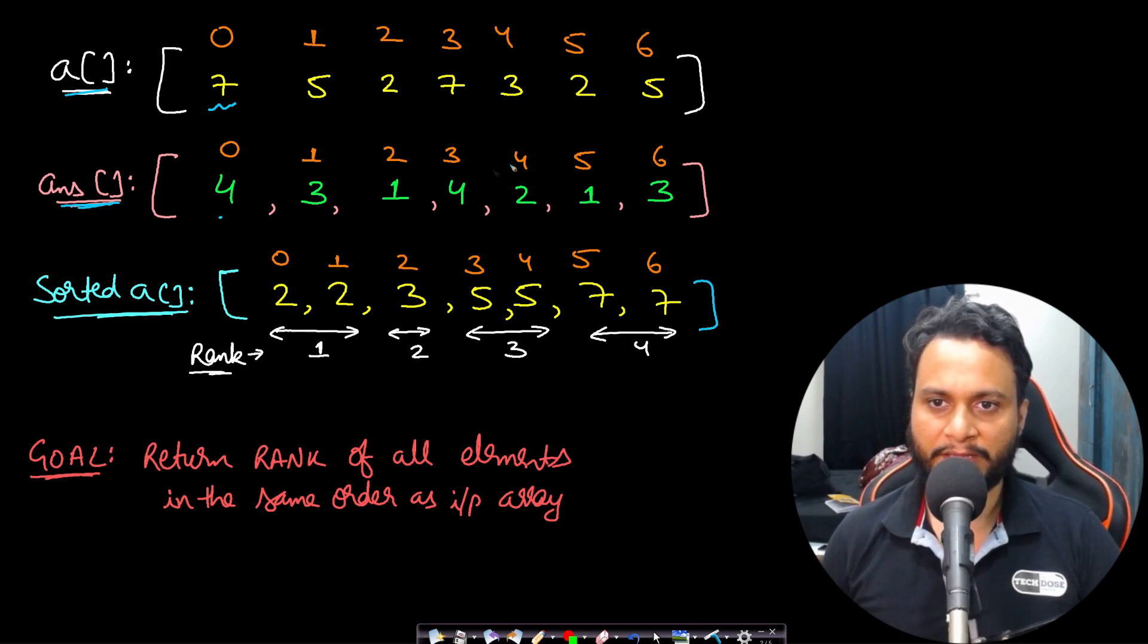By the way, what is a rank? If we arrange all these items in non-decreasing order, that means in ascending order, then the first item coming will be getting rank 1. Then the second unique item coming will get a rank 2.